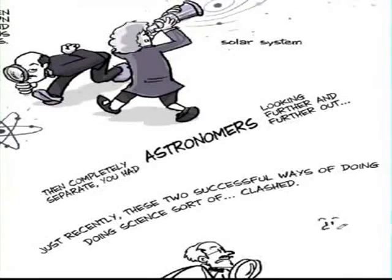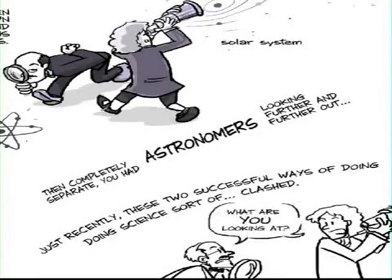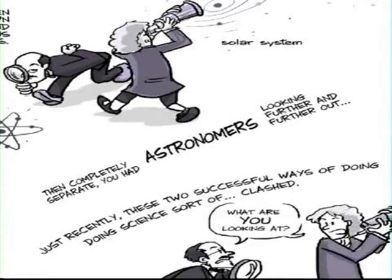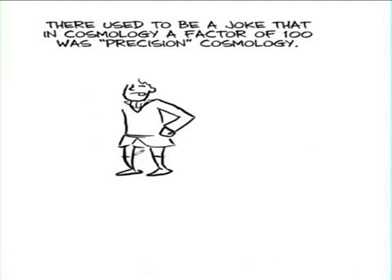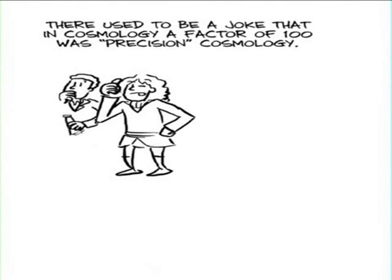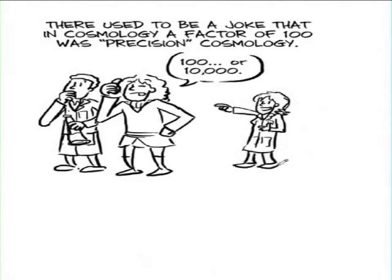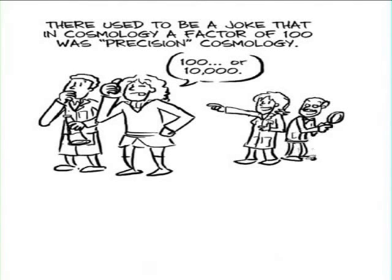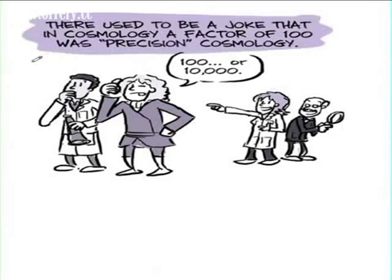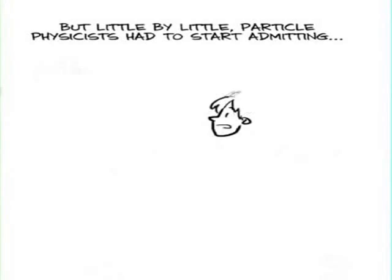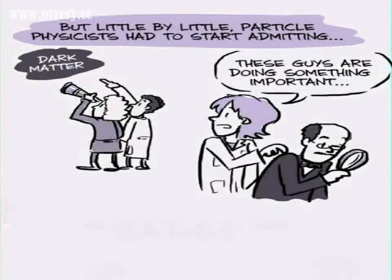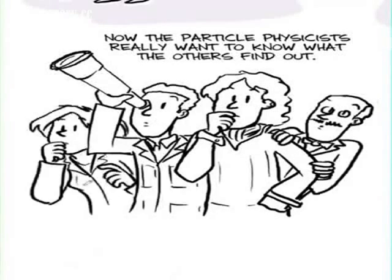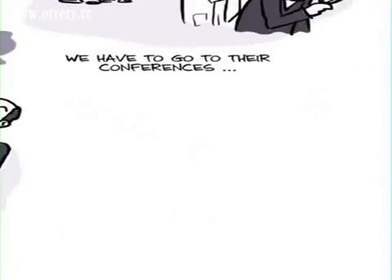And just kind of, in some sense, just recently, these two successful ways of doing science have sort of clashed. I mean, there used to be a joke that in cosmology, if you got anything accurate into a factor of 100, that was precision cosmology. We used to make fun of them because they couldn't measure anything. And little by little, particle physicists have started admitting that these guys are doing something important. Really want to know what they find out. So now we have to pay attention to them. We have to go to their conferences.